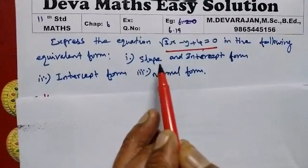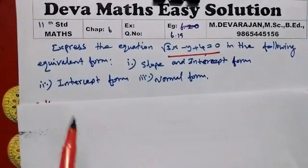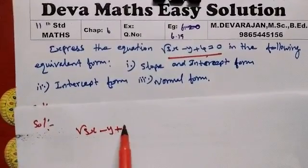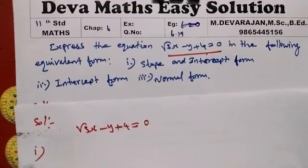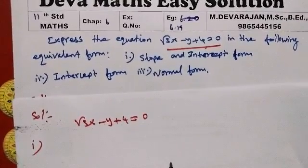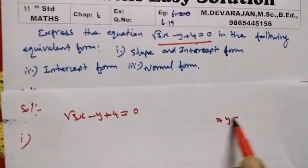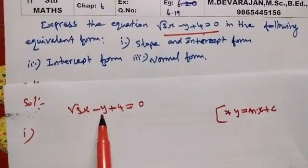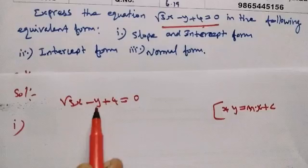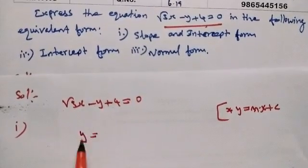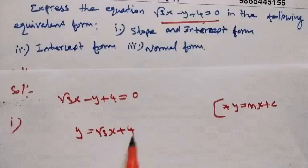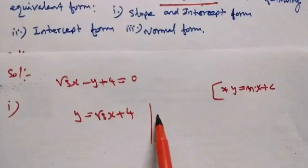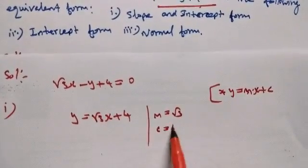For this line equation, we are going to find the slope-intercept form, intercept form, and normal form. First, the given equation is √3x minus y plus 4 equal to 0. For slope-intercept form, y equal to mx plus c. Isolating y, we get y equal to √3x plus 4. So here, m equal to √3 and c equal to 4, which is the y-intercept.